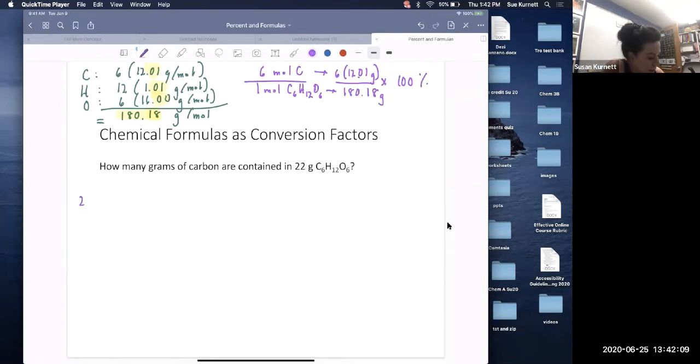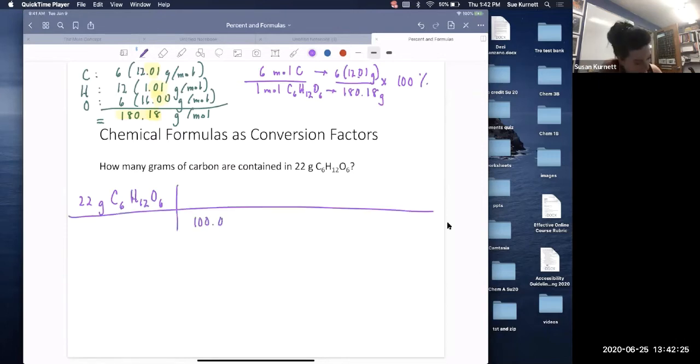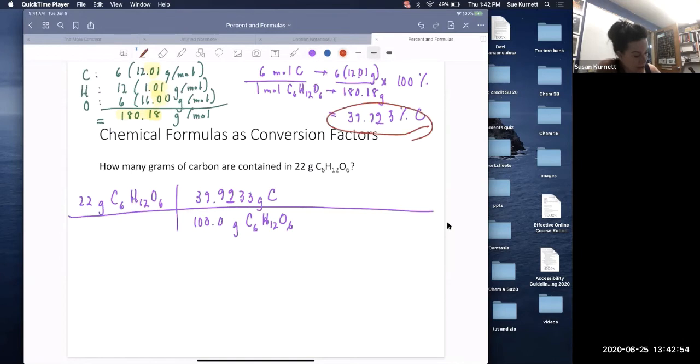So I could answer, I could do the problem this way. In 22 grams of C6H12O6, one kind of sugar. If I had 100 grams, 39.99 grams would be carbon. So I'm taking the percent that I solved for here and I'm using it as a conversion factor right there.